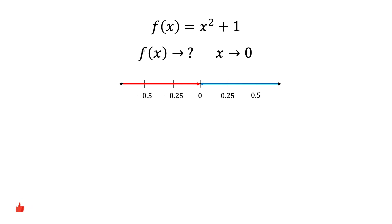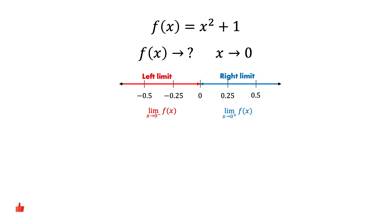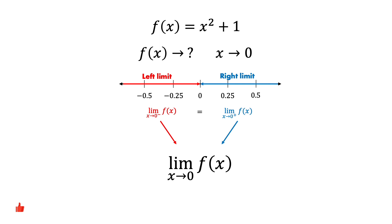The limit that we get when we approach 0 from the left is called the left limit. Likewise, the limit that we get when we approach 0 from the right is called the right limit. For this function to have a limit as x approaches 0, the left limit and the right limit must be equal.